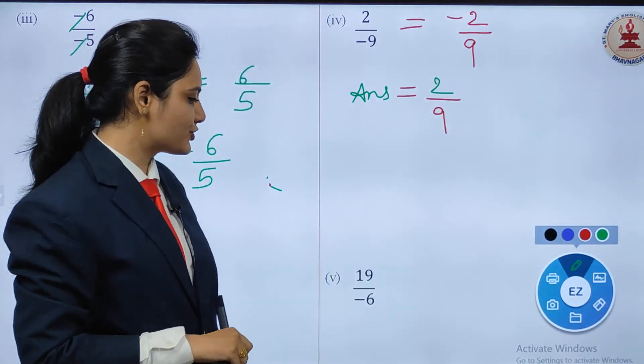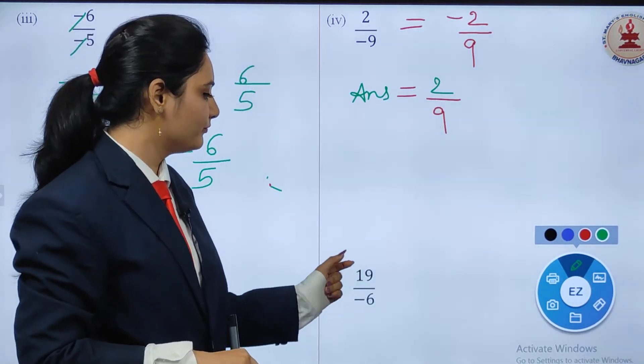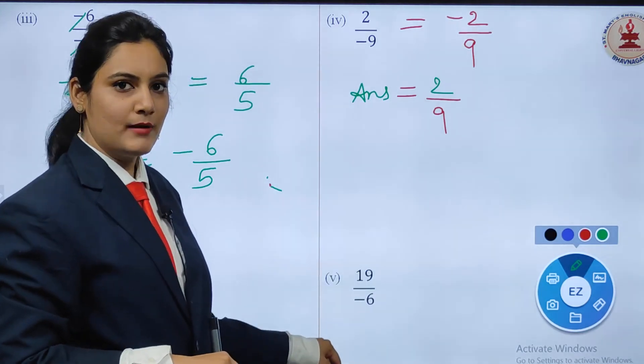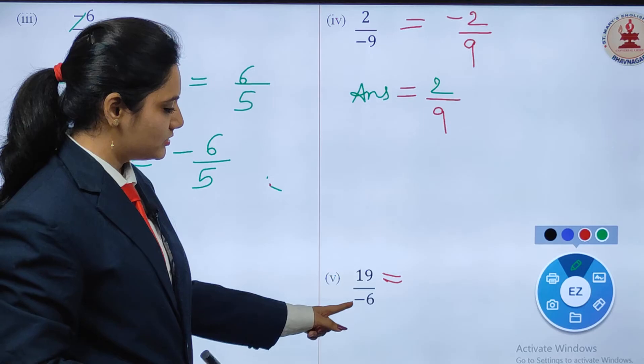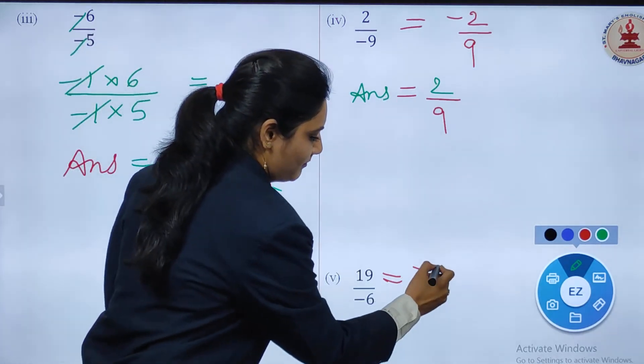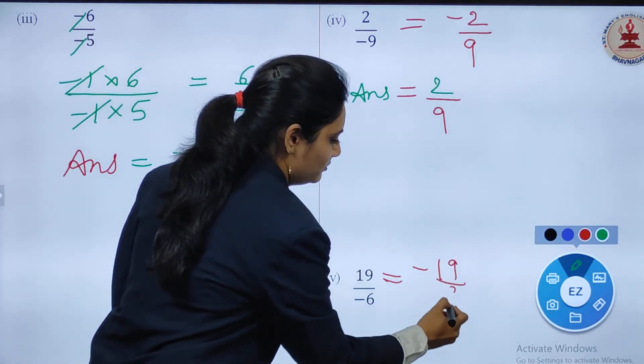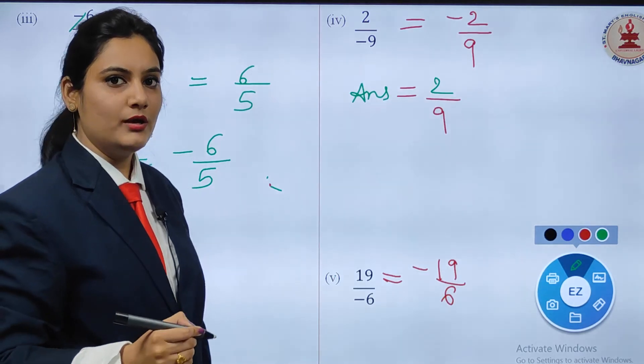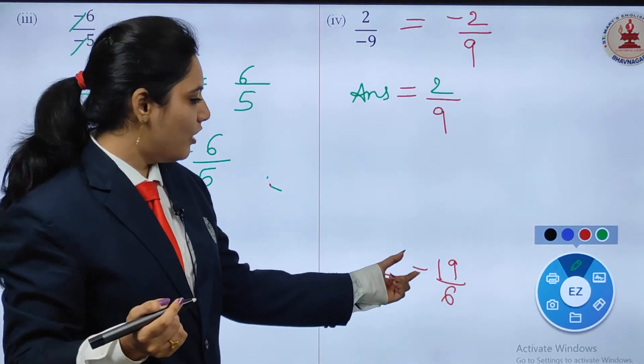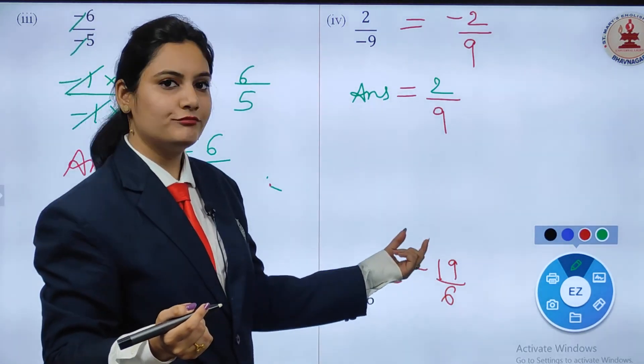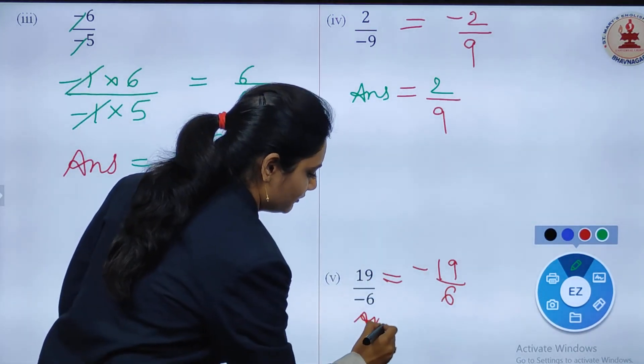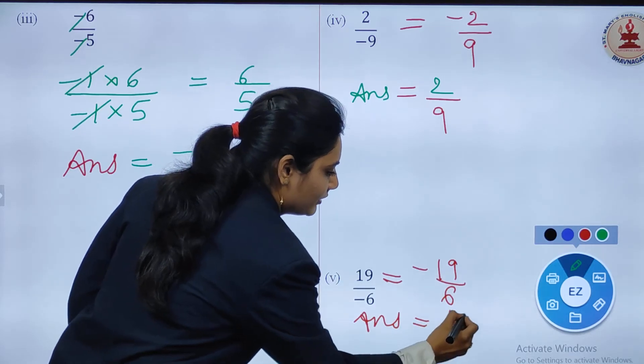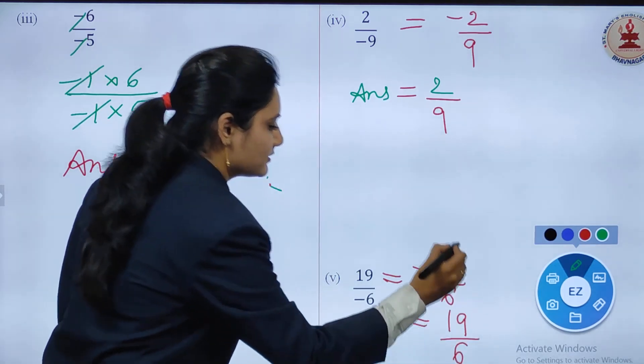The last question is similar to question 4: 19/-6. First, take the minus to the numerator, giving -19/6. Now the inverse of the negative number will be positive. Just change the sign, and the answer is 19/6.